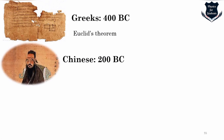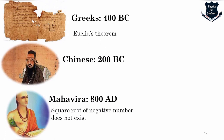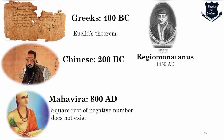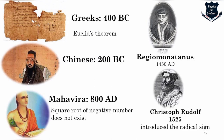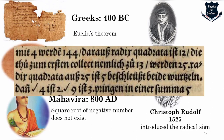Chinese mathematicians around 200 BC worked on what is called excess and deficiency involving square roots. Mahavira around 800 AD gave the square root of a negative number — which does not exist. In 1450 Regiomontanus used the symbol R (for radix) to indicate square roots. Finally, Christoph Rudolf in 1525 first used the modern square root symbol, as seen in an excerpt from his book.